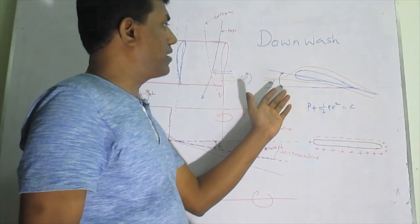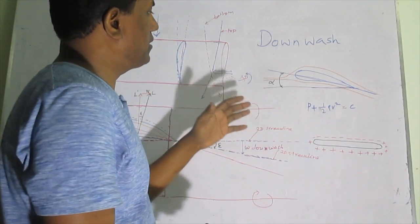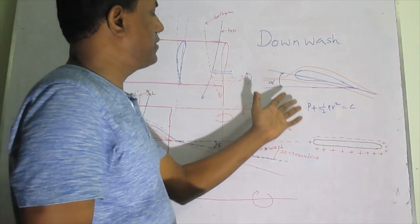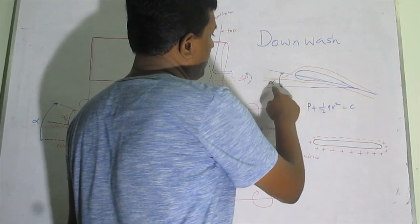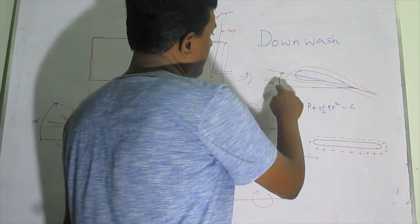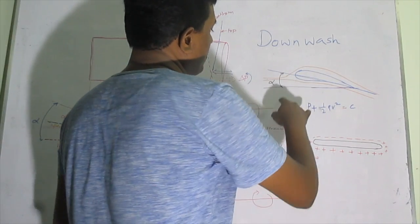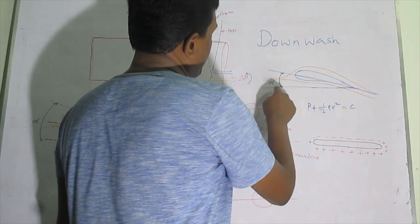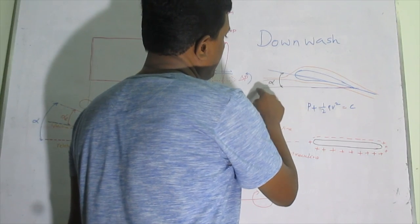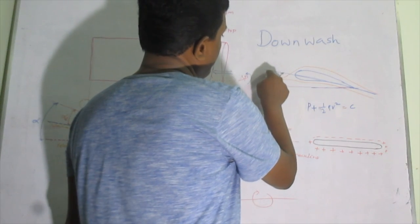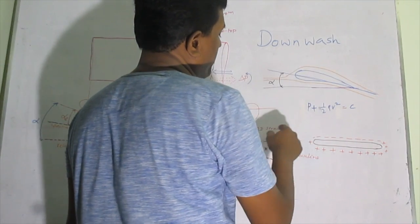First, we will see the flow over the aerofoil — how the flow happens and how pressure and velocities are interrelated. In the case of a 2D aerofoil, the flow structure happens above and below like this. The angle of attack is the angle between the relative air flow direction and the chord line of this aerofoil.